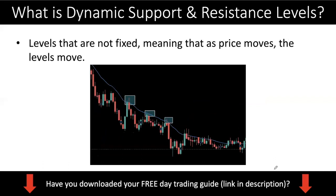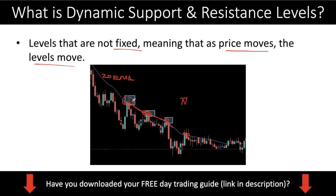What is a dynamic support and resistance level? It is just the opposite of fixed — dynamic means the levels are not fixed. As price moves, the levels themselves move, so you do not have a fixed price level. Here I have a chart showing the 20 EMA. You can see that resistance is dynamic in nature: price was resisted here at the 20 EMA, then here, then here. The resistance level is declining — it's not a fixed level but one that keeps moving down as price goes down.